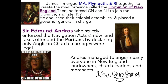King James ends up merging Massachusetts, Plymouth, and Rhode Island together, creating a royal province called the Dominion of New England. He then forces Connecticut and New Jersey to join the province, and later New York. So the colonies of Massachusetts, Rhode Island, Connecticut, New Jersey, and New York — most of the New England and middle colonies — are joined together under this Dominion of New England.